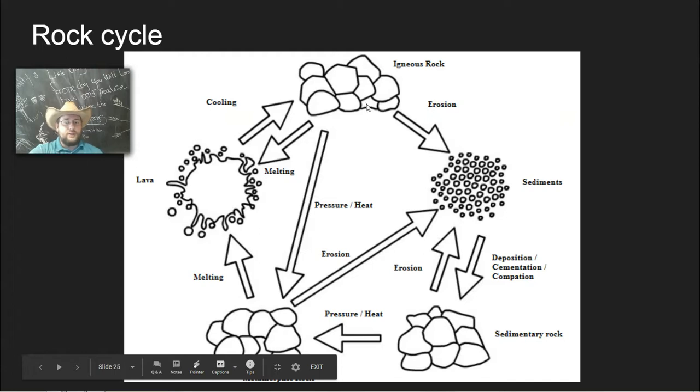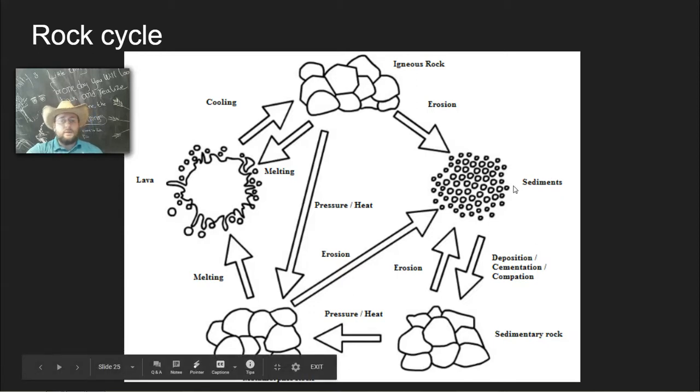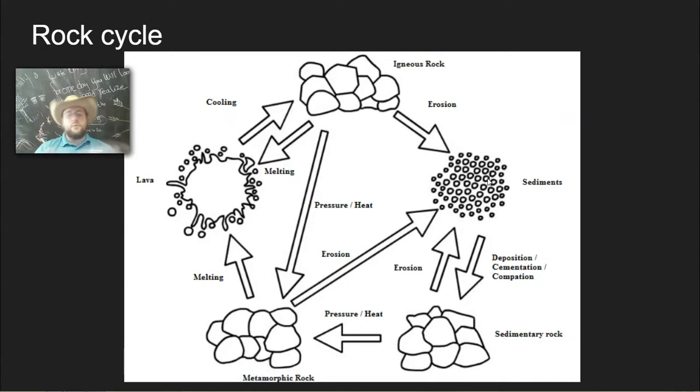If the igneous rock or sedimentary rock is broken down by erosion and weathering, you get back into sediments. And then if those sediments are put together - by the way, sedimentary rock can be broken down too, back into sediments. But if then those sediments actually get deposited, cemented, and compacted, you form sedimentary rock again. So that is basically the rock cycle. Rocks can change format.